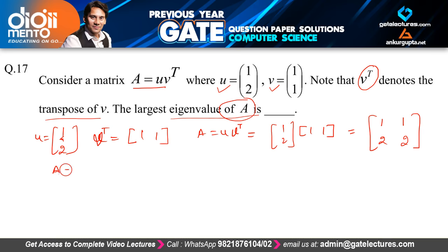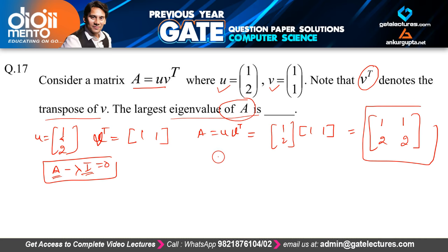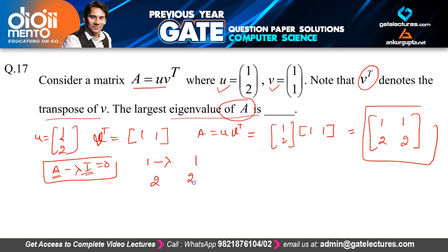To find the largest eigenvalue of A, we use the equation det(A − λI) = 0. Here A is [[1,1],[2,2]] and I is the identity matrix. Substituting, A − λI becomes [[1−λ, 1],[2, 2−λ]].